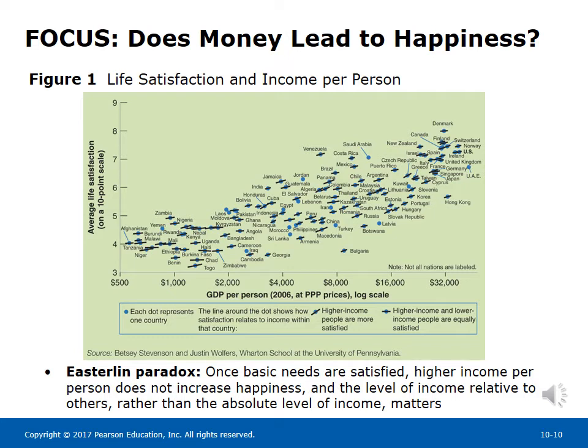The evidence on the relation between happiness and income per person over time within a country is not as clear as the evidence across countries or across individuals. Angus Deaton and Daniel Kahneman have also raised the issue of distinguishing between emotional well-being and life satisfaction: emotional well-being is positively related to income per person until income reaches $75,000, but not after that. Deaton and Kahneman conclude that high income buys life satisfaction but does not necessarily buy happiness.